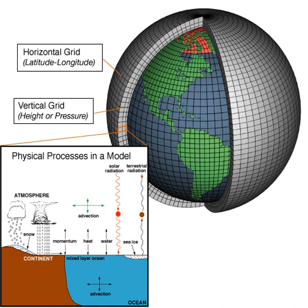Atmospheric GCMs model the atmosphere and typically contain a land surface model as well, using imposed sea surface temperatures. They may include atmospheric chemistry. AGCMs consist of a dynamical core which integrates the equations of fluid motion, typically for surface pressure, horizontal components of velocity in layers, temperature and water vapor in layers, and radiation split into solar short-wave and terrestrial infrared long-wave components. Parameters include convection, land surface processes, albedo, hydrology, and cloud cover. GCMs contain prognostic equations that are a function of time — typically winds, temperature, moisture, and surface pressure — together with diagnostic equations evaluated for a specific time period.